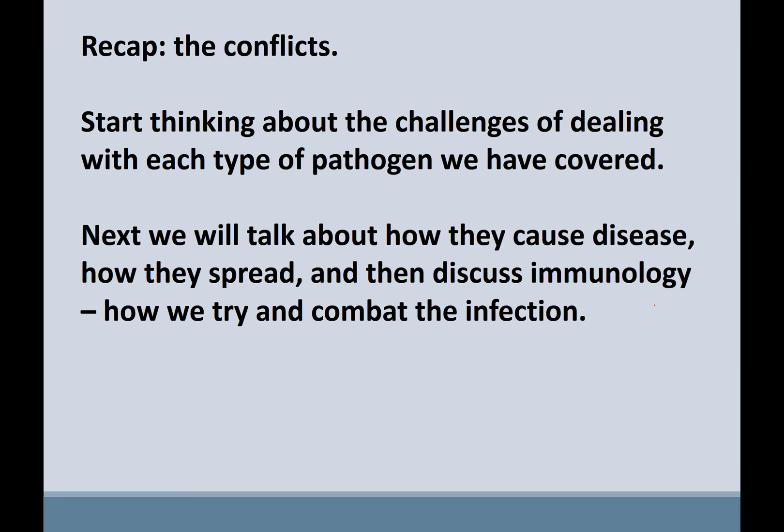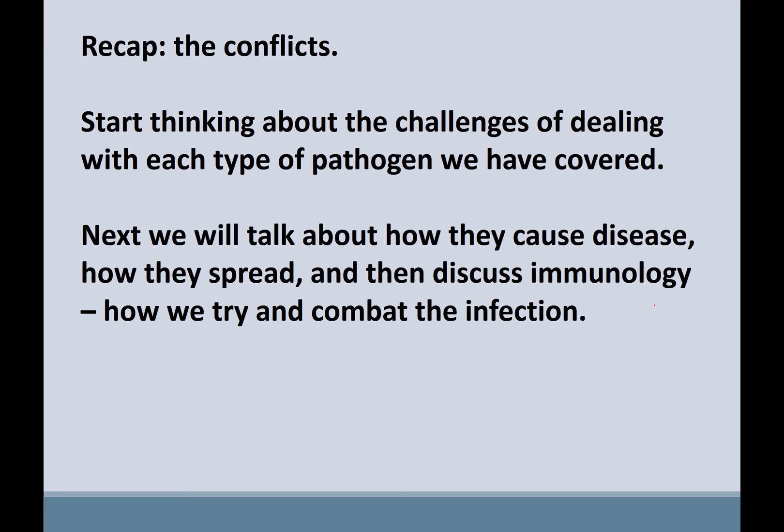Think about the challenges of dealing with each type of pathogen — we've covered bacteria, viruses, fungi, protozoa, and helminths. Next we'll discuss how they cause disease and how they're spread, and in week four we'll start immunology — how we try to fight infection. Remember you have homework due, posted on Canvas, and there will be more lectures next week.